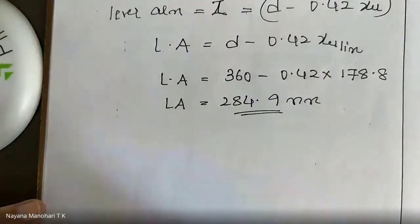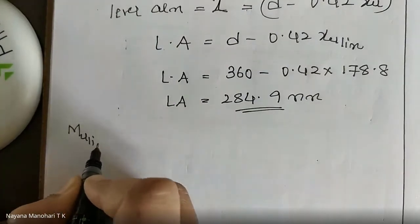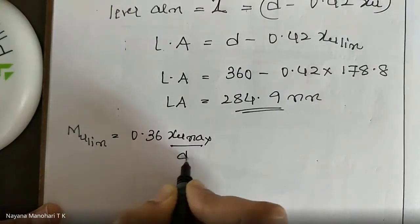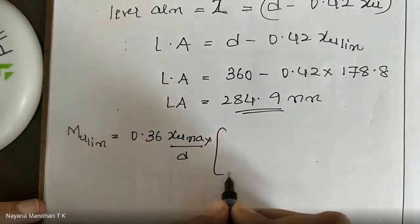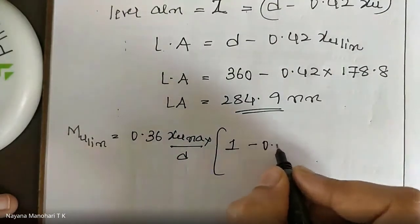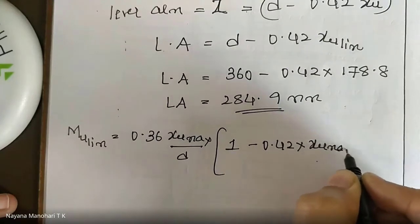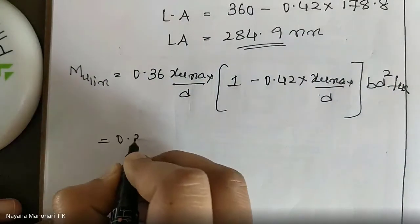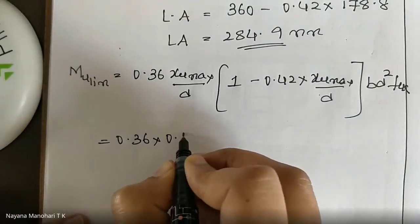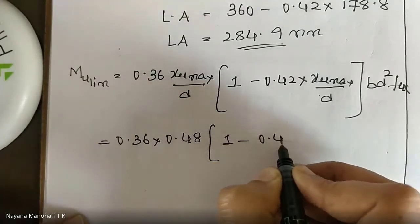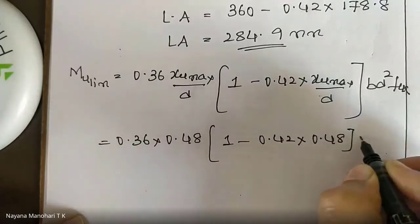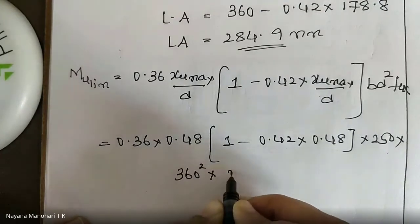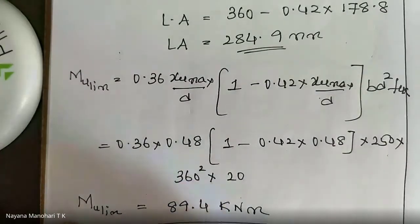The last step is the moment of resistance. For an over-reinforced section, MU = MU limit. The formula from the code book page 96 is: MU = 0.36 × (XU max / D) × [1 − 0.42 × (XU max / D)] × B × D² × FCK. For Fe415, XU max/D = 0.48. Substituting: 0.36 × 0.48 × (1 − 0.42 × 0.48) × 250 × 360² × 20.